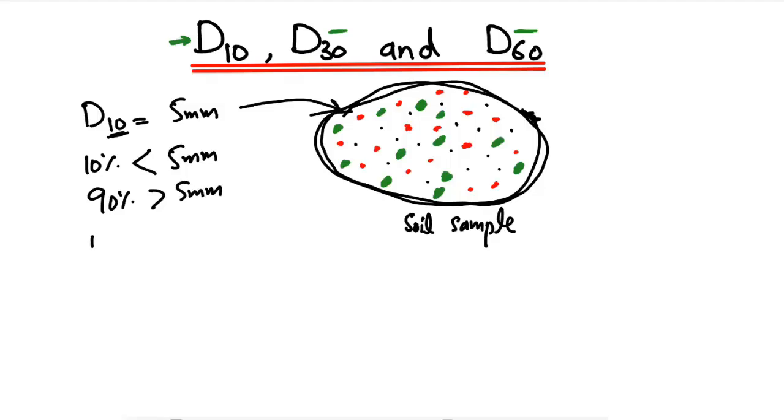D30 means, for example, if D30 is 10 millimeters in this case, the small subscript number shows the percentage. So 30 means 30 percent of the particles.